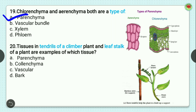Question number 20: tissues in tendrils of a climber plant and leaf stalks are an example of which tissue? A tendril is a delicate part of a plant that provides grip. In the image you can see the tendril of a climber plant. Collenchyma tissue is found in tendrils of climbers and leaf stalks.